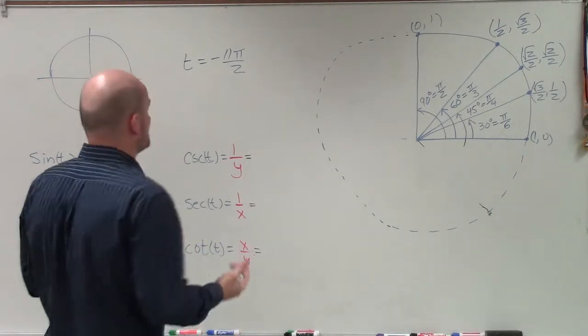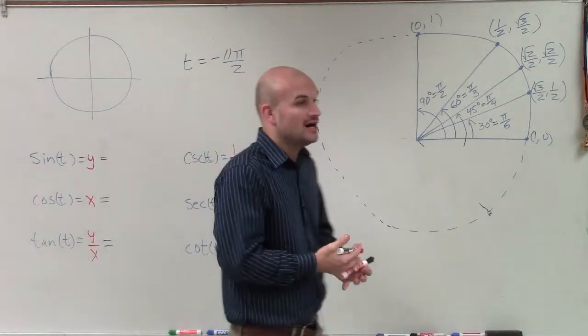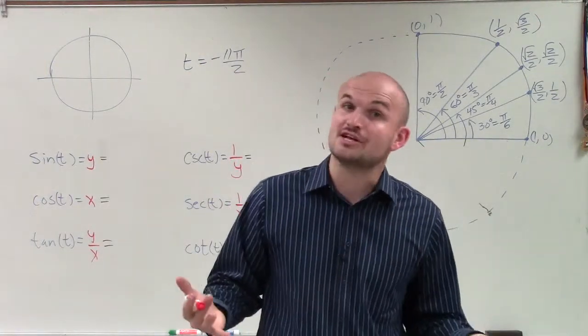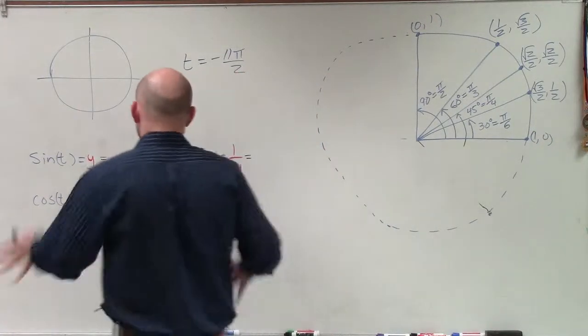To do that, we need to determine where negative 11 pi over 2, where that angle is, and where it's going to cross our unit circle. There's a couple ways we could do this.